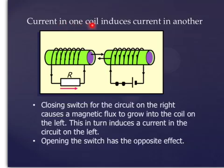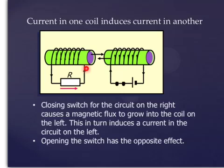Current in one coil can induce current in another coil. There are two coils here, end to end. Closing the switch for the circuit on the right can cause a magnetic flux to grow into the left coil. This in turn induces a current in the circuit on the left. Opening the switch has the opposite effect — in other words, it will cause the current in this coil to flow the other way.